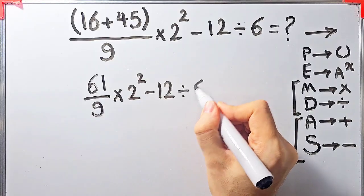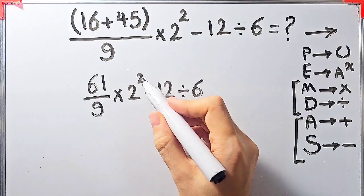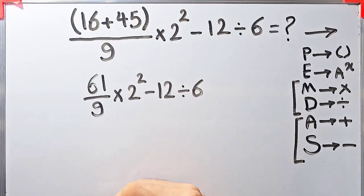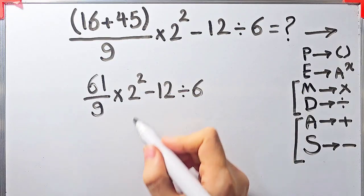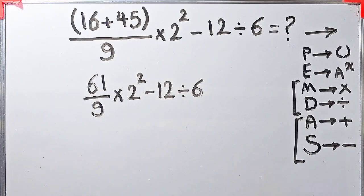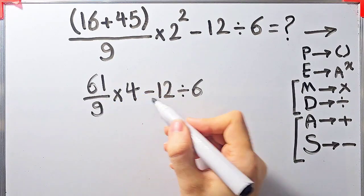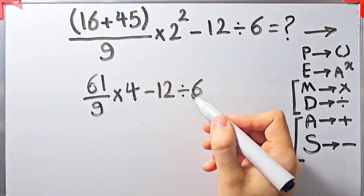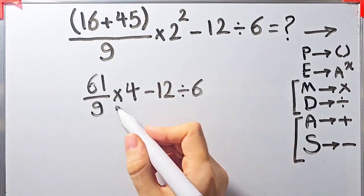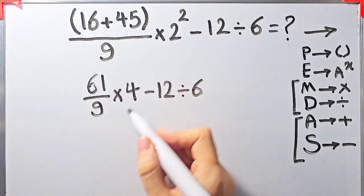Now we have multiplication, exponents, subtraction, and division. In this step we simplify the exponent: 2 to the power of 2 equals 4. So now we have 61 over 9 times 4 minus 12 divided by 6.